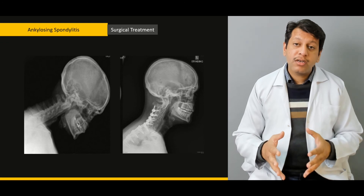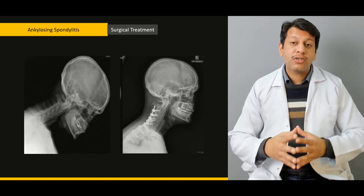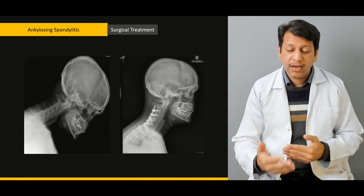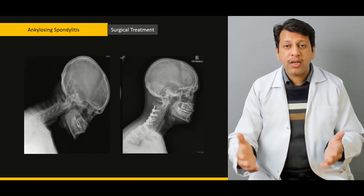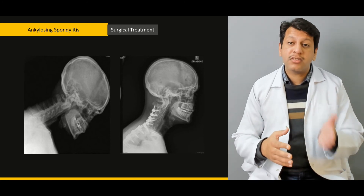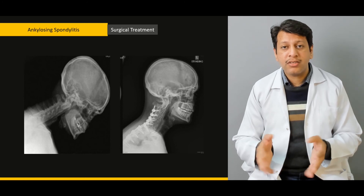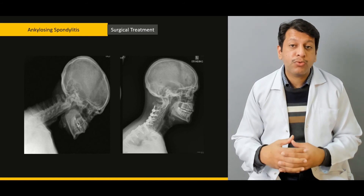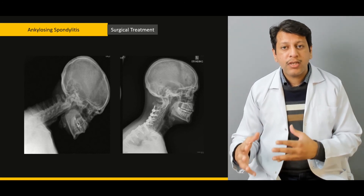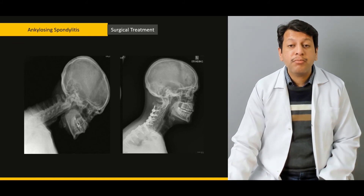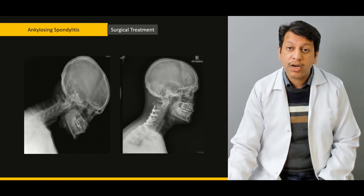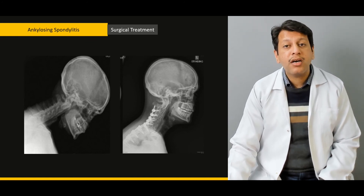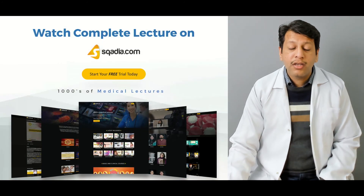It is important to understand that this is not simply a spinal disease — it is an autoimmune systemic disease. Different treatment modalities may require involvement of other specialties for both rheumatoid arthritis and ankylosing spondylitis. The role of the orthopedic surgeon is to deal with the complications, including osteotomies such as pedicle subtraction osteotomy, Smith-Petersen osteotomy, or vertebral resection osteotomy.